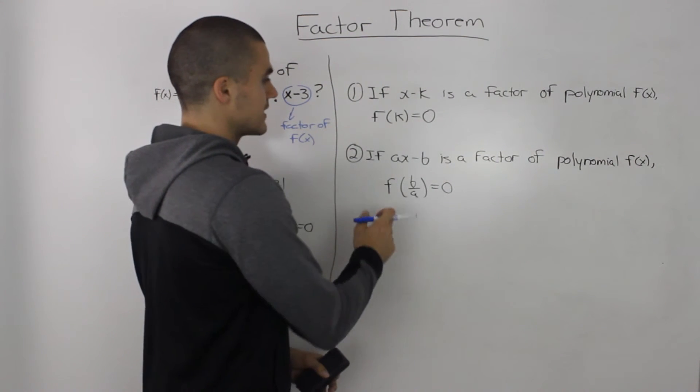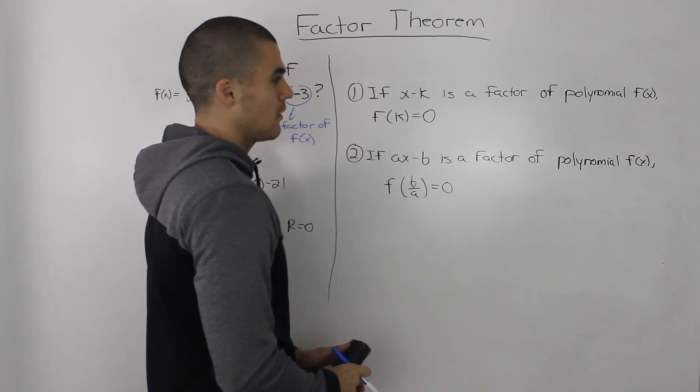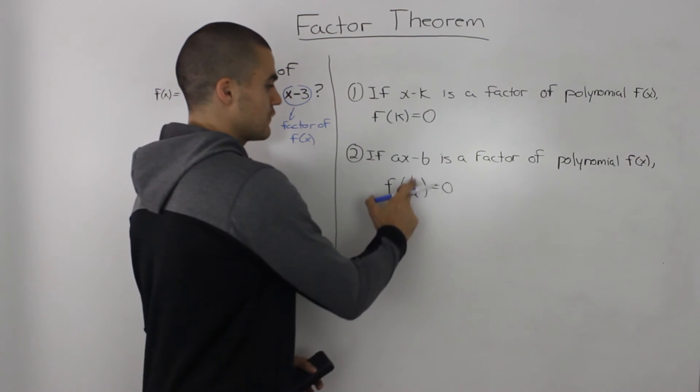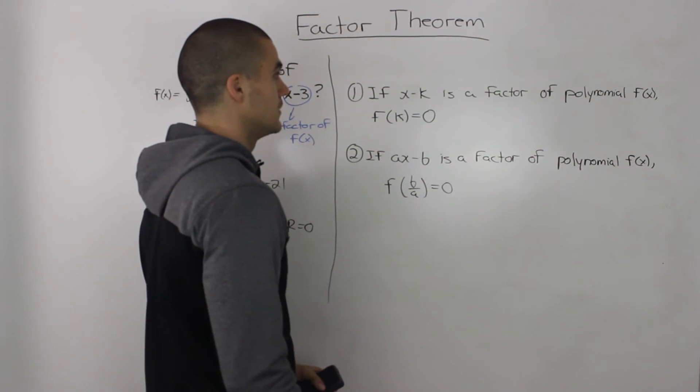The second case is if (ax - b) is a factor of polynomial f(x), then f(b/a) = 0.